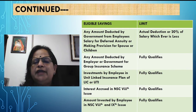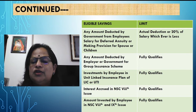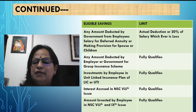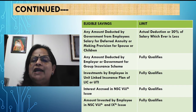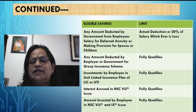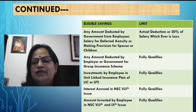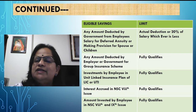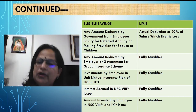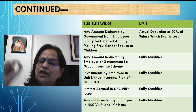Next is interest accrued in NSC 8th issue — it fully qualifies. NSC 8th and 9th issue is also now in circulation. The interest is getting accrued every year but we do not get it in hand like bank interest. NSC — National Savings Certificate — is an instrument where the interest details are mentioned on the back side. If it matures after six years, all six years' value will be there, and we can claim it only on the date of maturity. That interest accrued can be claimed under 80C.